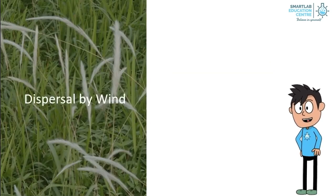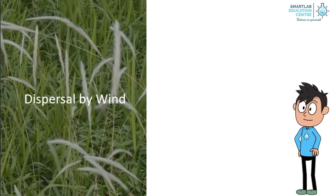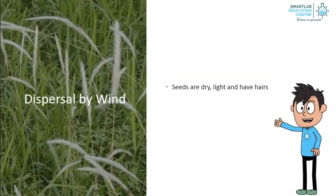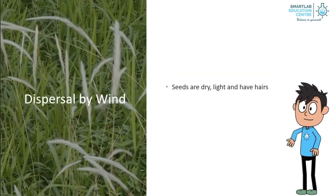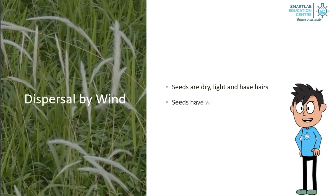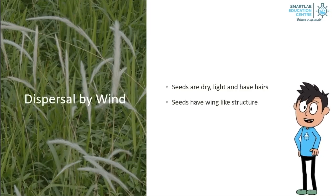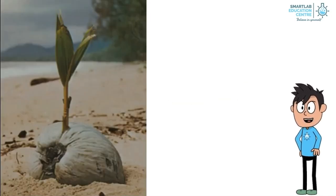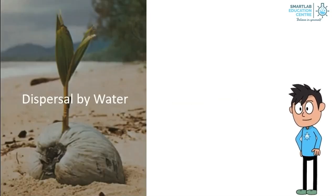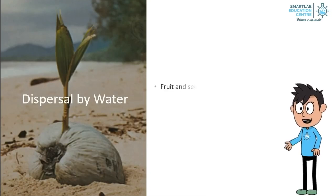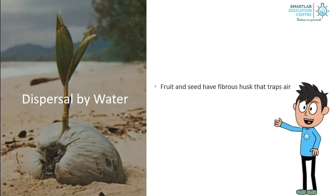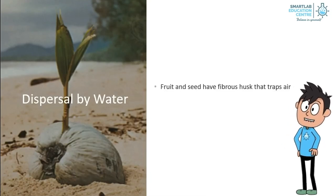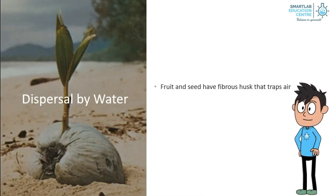Dispersal by wind: these seeds are dry, light, and have hairs. These seeds also have wing-like structures. Dispersal by water: the fruit and seed have a fibrous husk that traps air, allowing a fruit to float in water.